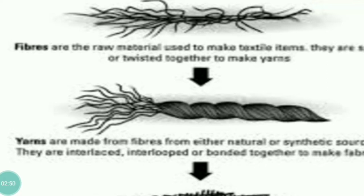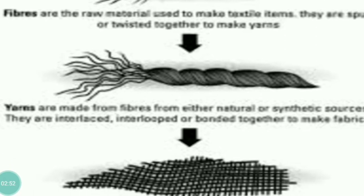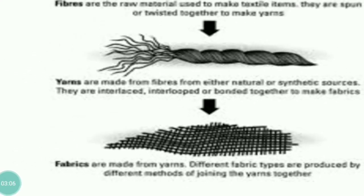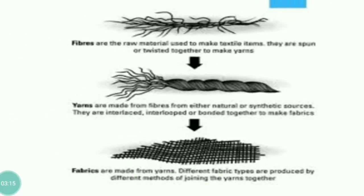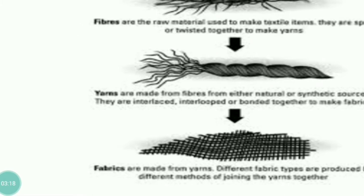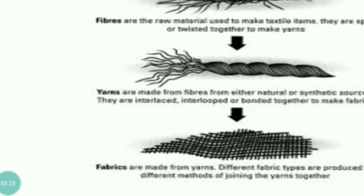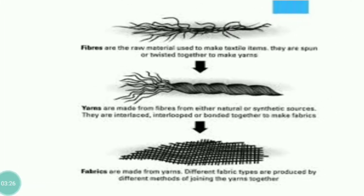Now fibers can be either natural or synthetic. Yarns combine together to form fabrics, and different fabric types are produced by different methods by which different yarns are joined together. So remember: fibers combine to form yarns, and yarns combine to form fabrics. The clothes which we wear are made up of fabrics, and fabrics are made from fibers.